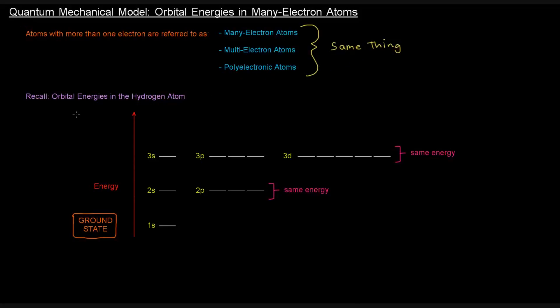If you recall, the orbital energies in the hydrogen atom - so long as the principal quantum number was the same, all of the orbitals at that energy level had the same energy. The 3s, 3p, 3d all the same energy. The 2s and the 2p had the same energy.